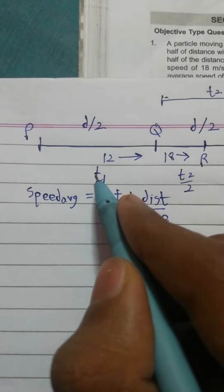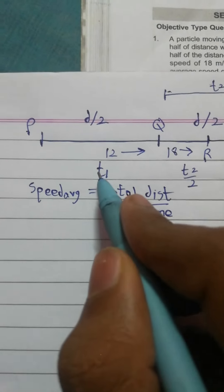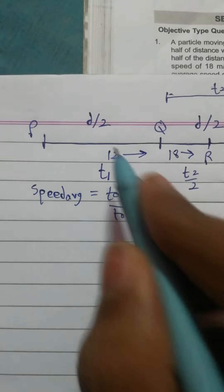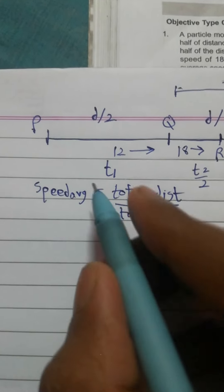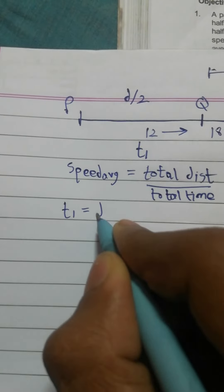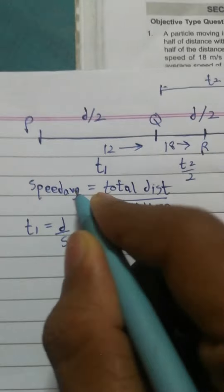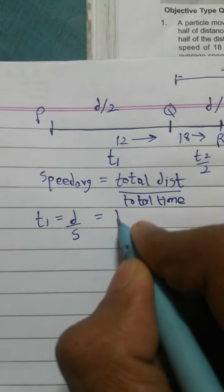So here firstly we need to find distance covered in T1 time. We need to express T1 in terms of distance and speed. So we know that time is distance upon speed, and we are writing it for T1.